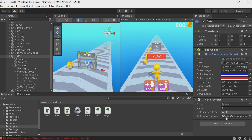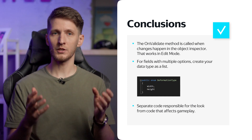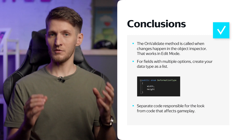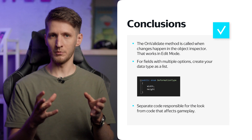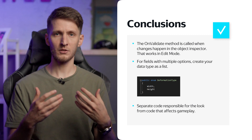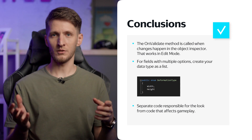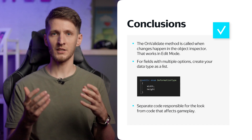Let's make sure everything still works. We add the link and check — we change the value here and everything works. Let's go over the key points: the OnValidate method is called when changes occur in the object's inspector and it works in edit mode. If you need a variable that is a choice of several options, use enum. Always separate the code responsible for appearance from the code that affects the gameplay.